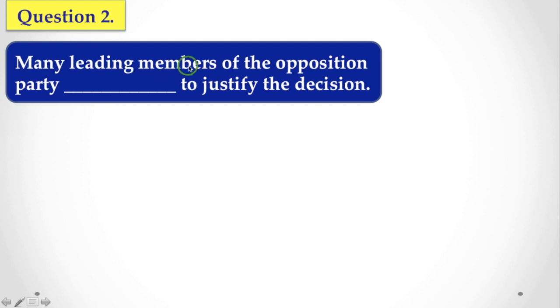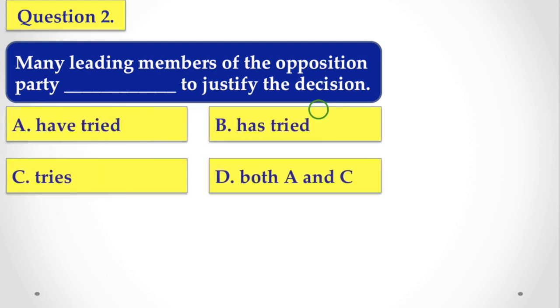The next question: Many leading members of the opposition party to justify the decision. This is very important and often you get confused while using verb to these questions. So let's see the options now. The options are: have tried, has tried, tries, and A and B both, A and C both.